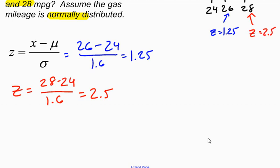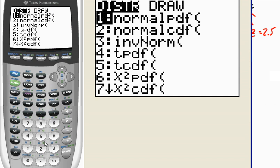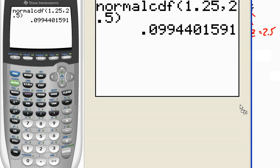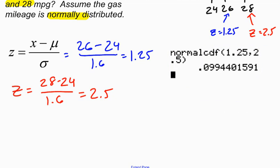All right, now I'm going to go to my calculator and find the area between them. I'm going to use second VARS number 2, which is normal CDF. I'm going from 1.25. I always want to give the left boundary first and then the right boundary. So 1.25 comma 2.5. When I hit enter, there is my probability right here, 0.099.